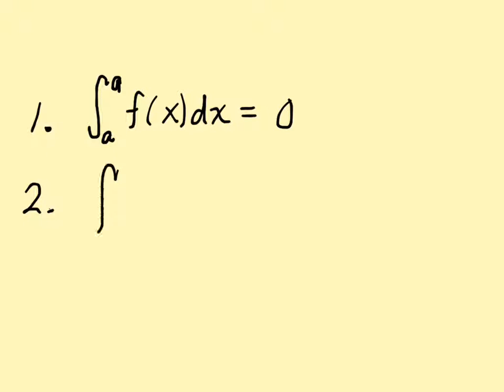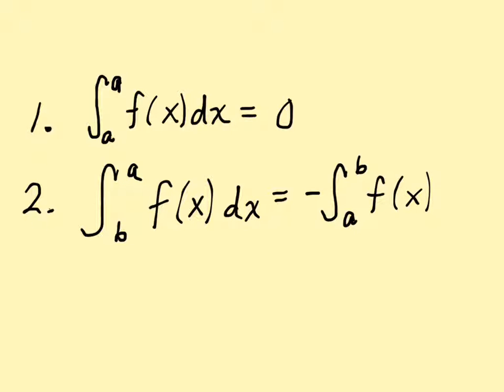The second one is if I have the integral from b to a of f of x dx, this is the same as the negation of the integral from a to b of f of x dx. The reality is if the numbers are backwards, we can switch them, but if you do switch the limits of integration, you have to change the sign in front of the integral.